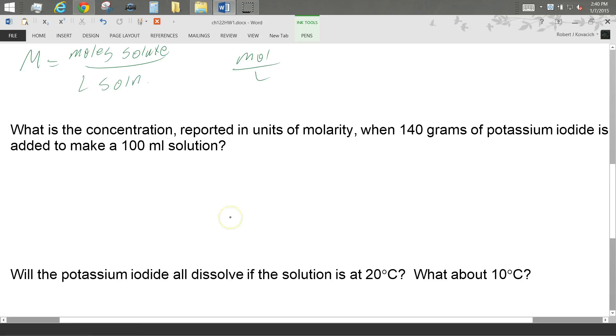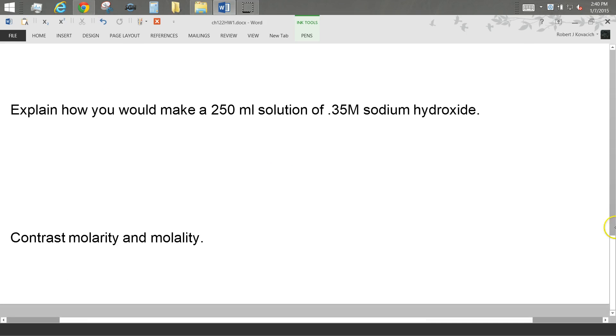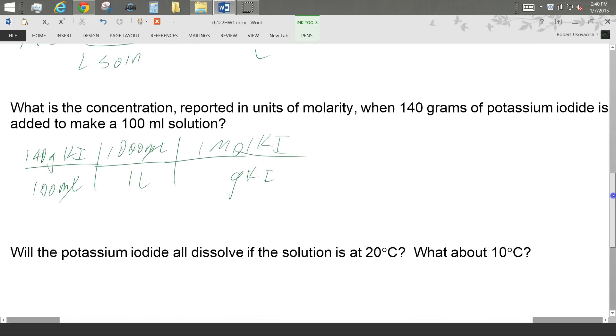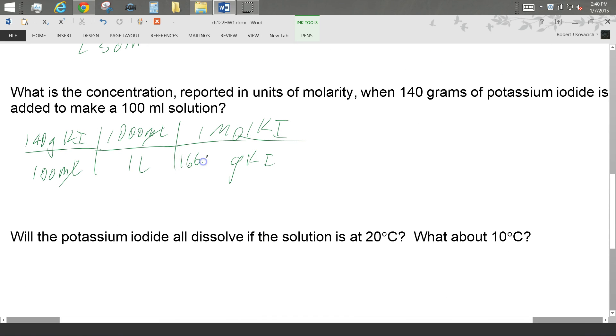What is the concentration reported in units of molarity when 140 grams of potassium iodide is added to 100 milliliters of water. Okay, so I need moles over liters for my answer. I've got grams and I've got milliliters. So I'll put 140 grams of potassium iodide over 100 milliliters. And then I'll put 1,000 milliliters here and 1 liter here and cancel the milliliters out. Now I need grams of KI here. I am, with grams of KI, I can put 1 mole of KI. So then I just need the molar mass of potassium iodide. It's 166.0023.